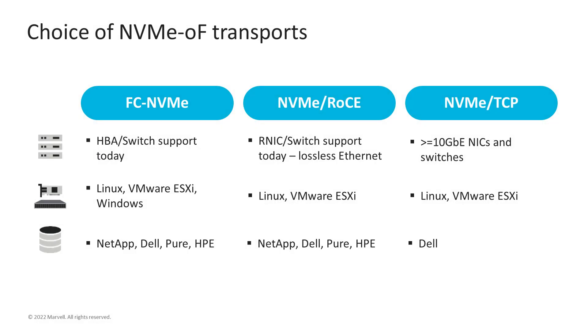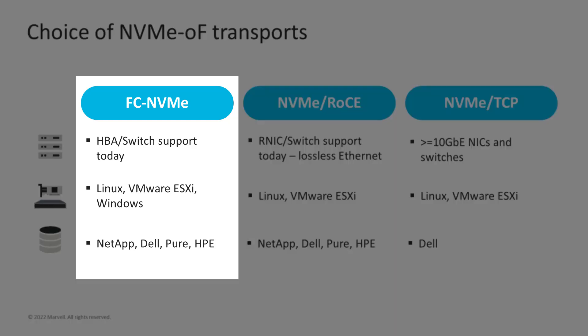There are three primary choices for NVMe over fabric transports available today. First is FC NVMe. For existing SAN customers, this will be the go-to option because there's little if any change required to their existing FC SAN environment. Their investment in enhanced 16-gig or 32-gig Fibre Channel infrastructure will enable them to seamlessly add FC NVMe connectivity to their existing SAN.